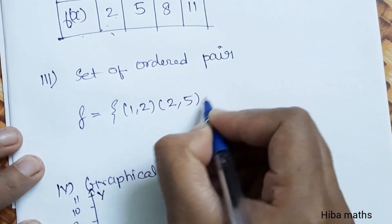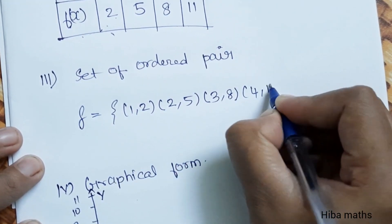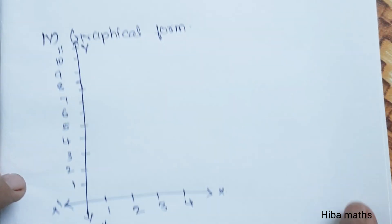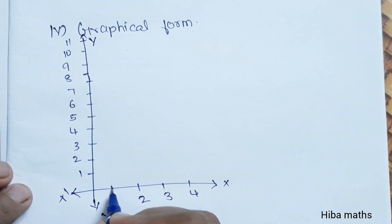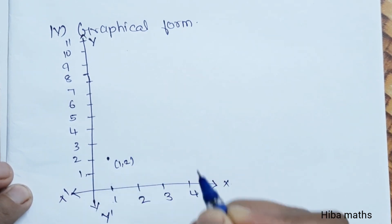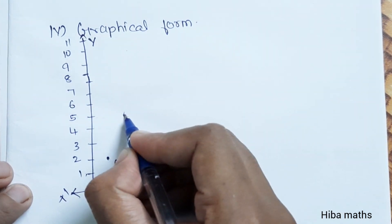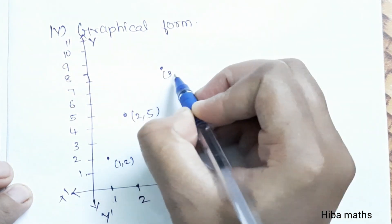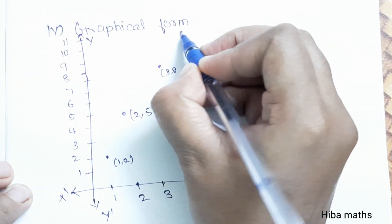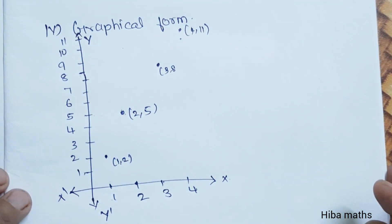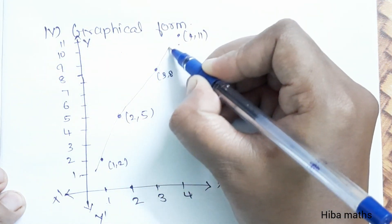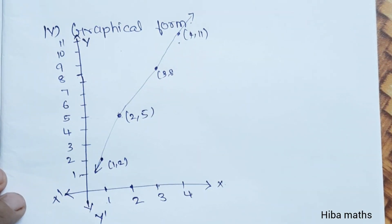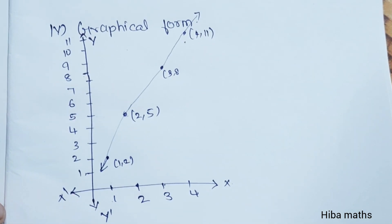The set of ordered pairs is {(1,2), (2,5), (3,8), (4,11)}. For the graphical form, plot on the x-axis and y-axis: point (1,2), (2,5), (3,8), (4,11). Mark each point and draw the graph. You need to draw this — it is worth 5 marks total for the full question.